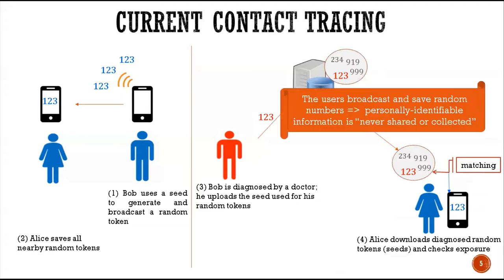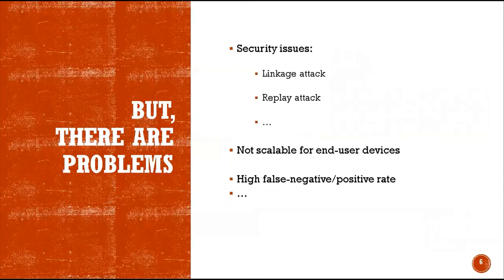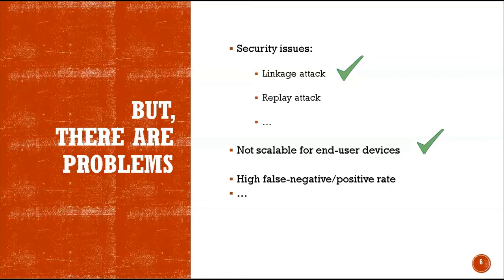So users broadcast and save random numbers, which makes it look like personal information is never shared or collected. But it's not always true. There are several problems, including security issues — for example, the linkage attack or relay attack. The current solution is not scalable for the end user device, and they have a high false positive or negative threat. In this talk, we focus on the linkage attack and want to address this problem. We also want to improve the performance of contact tracing, especially on the user device.